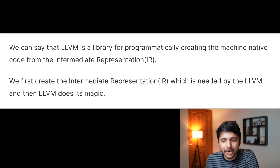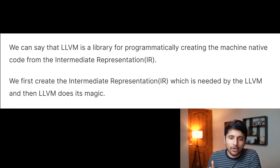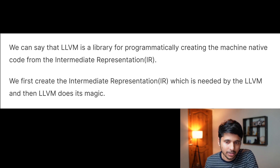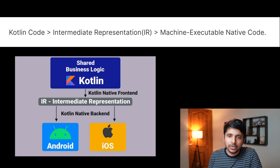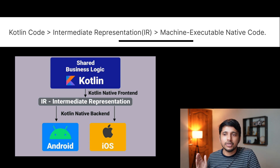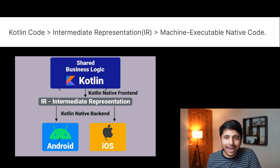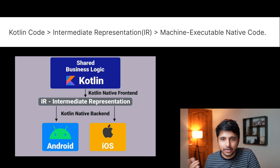Now we know that Kotlin Native is LLVM. So what is LLVM? LLVM is a library for programmatically creating machine code from Intermediate Representation (IR). We first create the IR, which is needed by LLVM, and then LLVM does its magic. So to summarize: the frontend converts the Kotlin code into IR, and the backend uses Kotlin Native — which is LLVM — to convert that IR into machine-executable code. This is how Kotlin Multiplatform works.